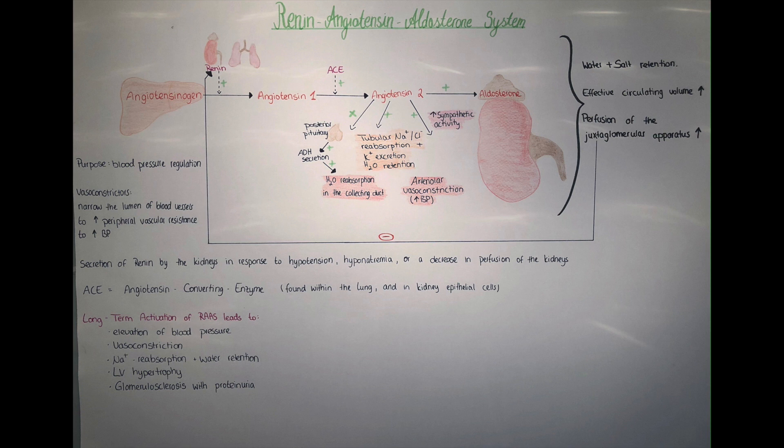Now going into more detail stepwise: the liver produces a precursor molecule called angiotensinogen. In response to an enzyme, angiotensinogen can be converted into another intermediate precursor molecule called angiotensin-1. The enzyme needed for this conversion is renin, which is secreted by the kidney in response to hypotension, hyponatremia, or a decrease in blood perfusion of the kidney.